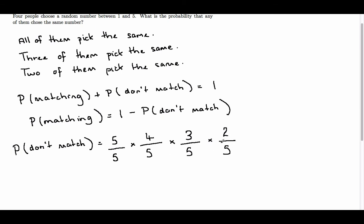So the probability that they don't match is 24/125. That is, the probability they all get different numbers is 24/125.